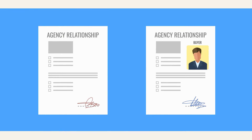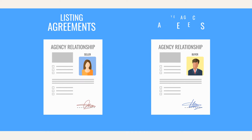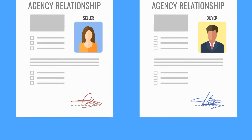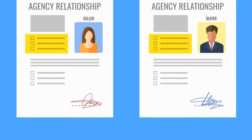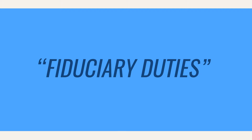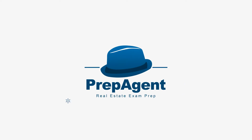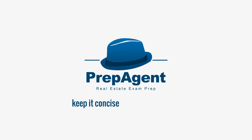Most agency relationships are established in writing with different agreements for buyers and seller agency relationships. Listing agreements involve sellers; buyer agency agreements involve buyers. Each has multiple types of agreements. The different agreements have many similarities, like the types of duties to be performed. One thing that stays the same are the fiduciary duties of the agent. Remember to use the acronym OLD CAR: Obedience, Loyalty, Disclosure, Confidentiality, Accounting, and Reasonable Care. I hope this helps you understand the different ways agency relationships are formed. Until next time, remember to keep it concise and keep it simple.